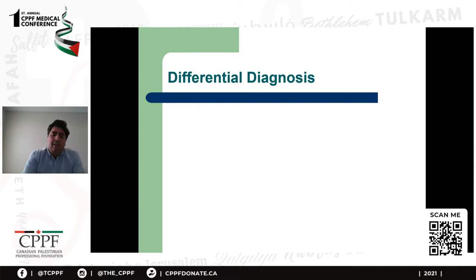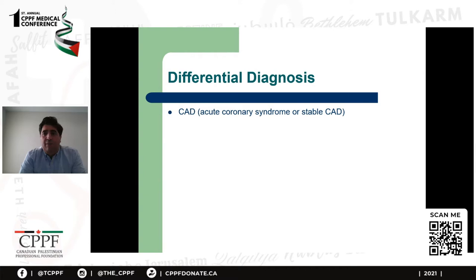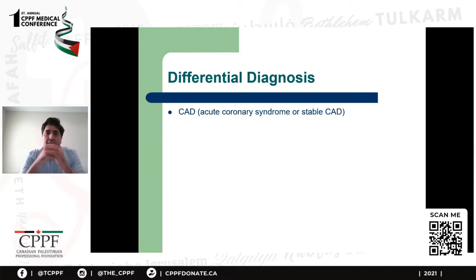The main thing on the differential diagnosis to keep in mind is coronary artery disease, and it comes in different forms. On one end of the spectrum there is stable coronary artery disease where patients have stable angina limiting them with exercise. On the other end of the spectrum are the acute coronary syndrome causes — whether unstable angina, non-ST elevation myocardial infarction, or ST elevation myocardial infarction. Coronary artery disease is one of the main causes of chest pain to keep in mind because it is life-threatening and needs to be diagnosed and treated in a timely fashion.